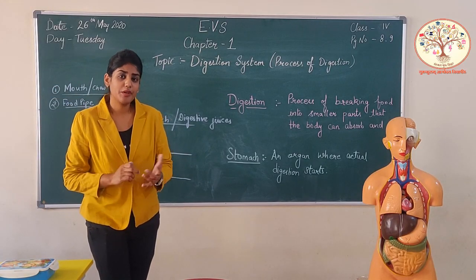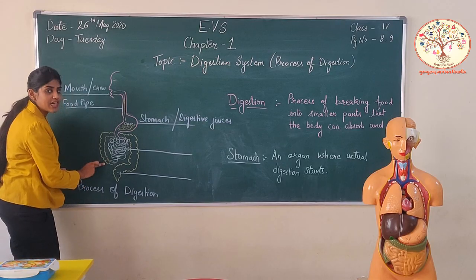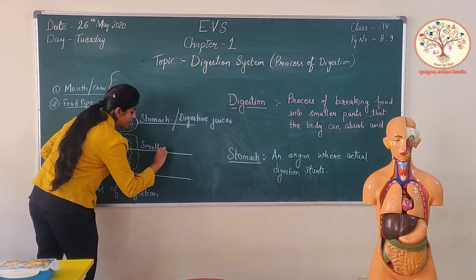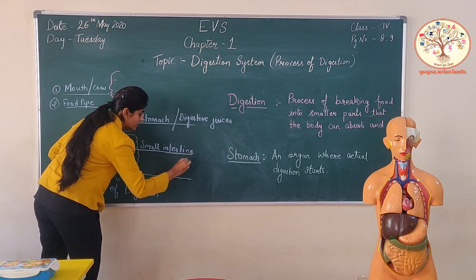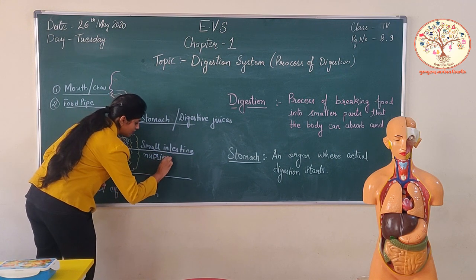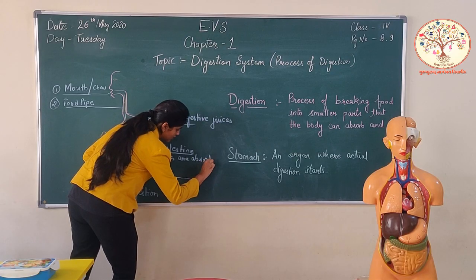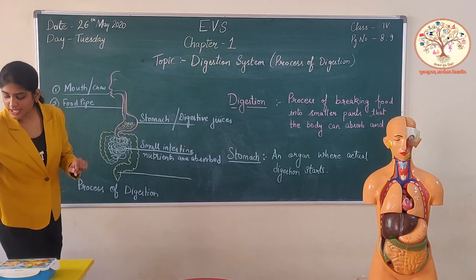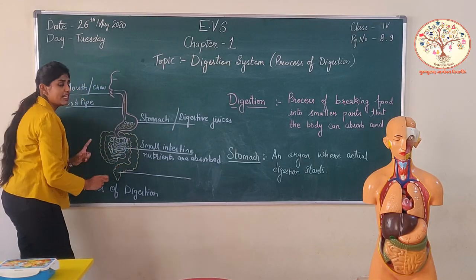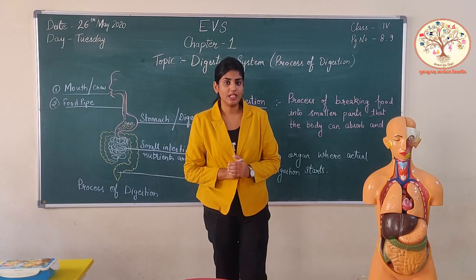Once the nutrients are absorbed by the blood, the undigested food — the food that is left — is of no use, because all the nutrients are already absorbed. The undigested food passes to the large intestine. In the large intestine, the extra water from the undigested food is absorbed.